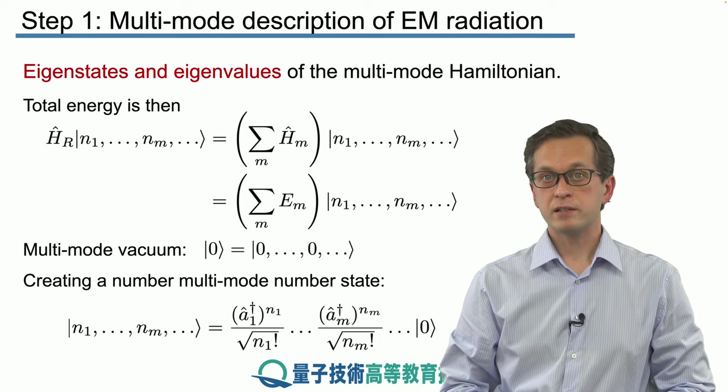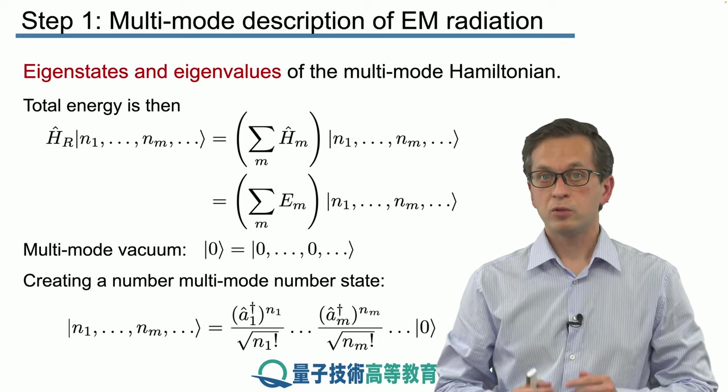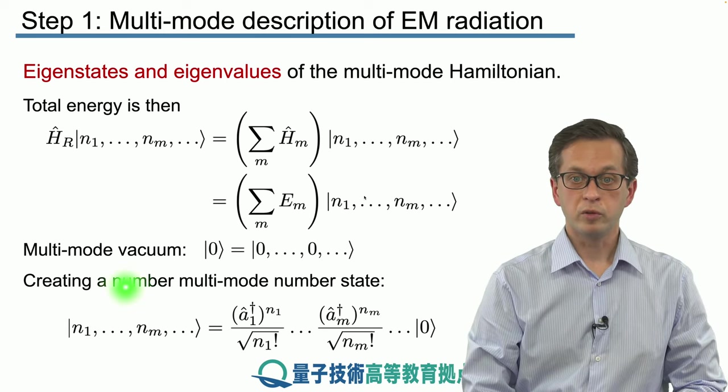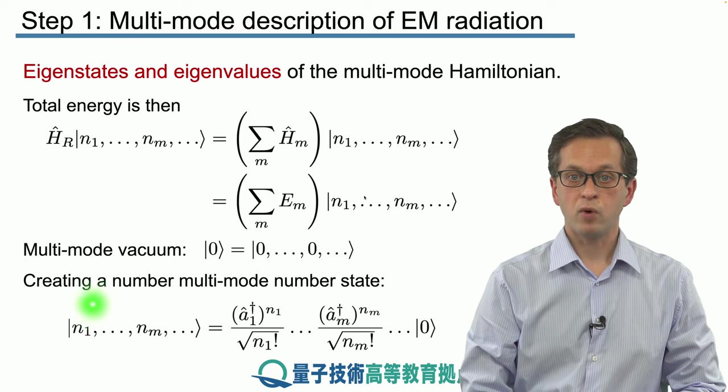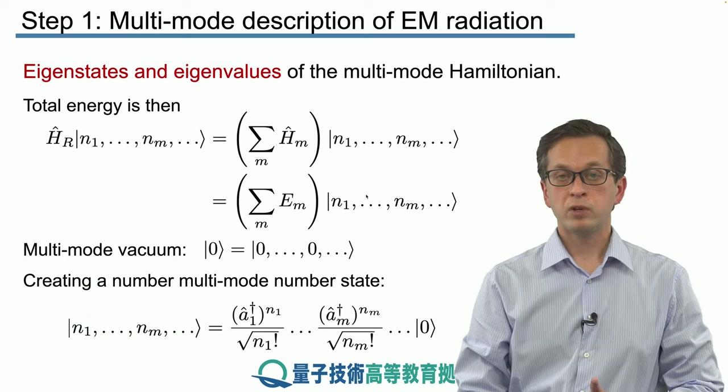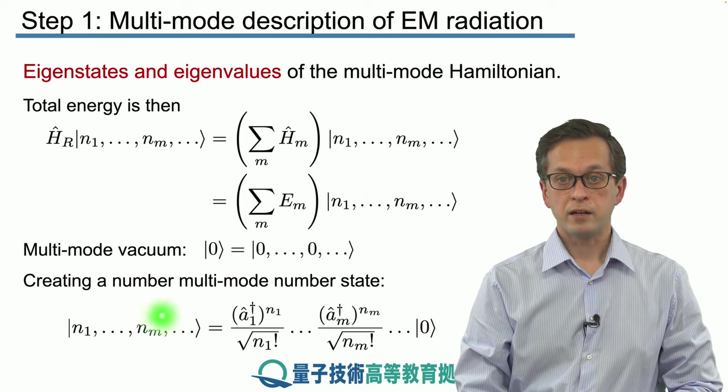As we have seen in the previous lessons, we can use the vacuum to generate any number state. In particular, if you want to generate the multimode number state n1, n2, up to nm, and so on, all we have to do is we have to apply the creation operator a dagger on mode 1. So a 1 dagger and we have to apply it n1 times.